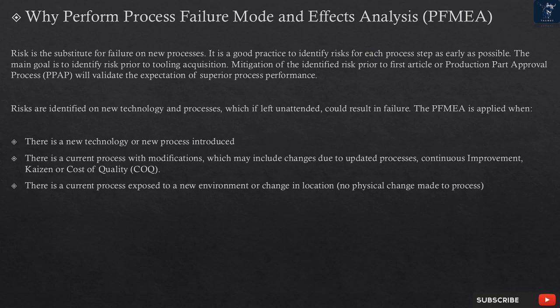Why perform Process Failure Mode and Effects Analysis? FMEA risk is the substitute for failure on new processes. It is a good practice to identify risks for each process step as early as possible. The main goal is to identify risk prior to tooling acquisition. Mitigation of the identified risk prior to first article or Production Part Approval Process (PPAP) will validate the expectation of superior process performance. Risks are identified on new technology and processes, which if left unattended could result in failure. The FMEA is applied when there is a new technology or new process introduced, or a current process with modifications — which may include changes due to updated processes, continuous improvement (Kaizen), or cost of quality (COQ). It also applies when there is a current process exposed to a new environment or change in location.